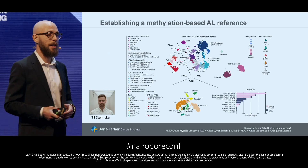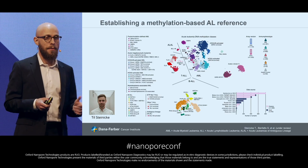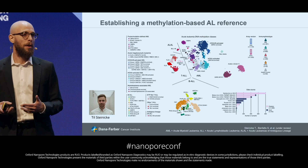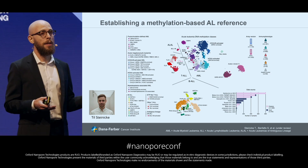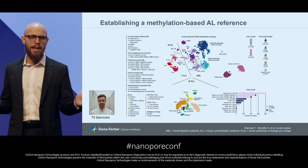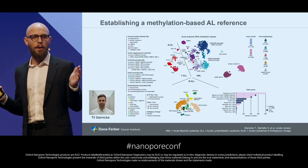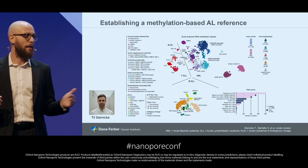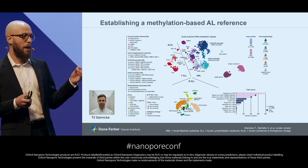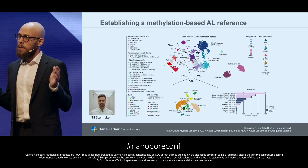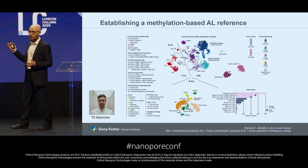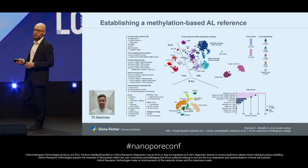We assembled this comprehensive reference cohort, and here I would like to highlight the work of Till Steinecke, a student I'm honored to mentor and co-lead the project with. He did amazing work collecting all these samples. These are publicly available data — all acute leukemia samples profiled with Illumina array technology, coming from different studies. I want to thank all the authors for making this data public.